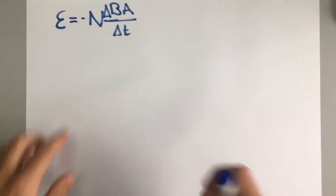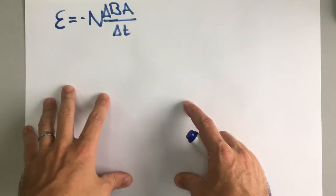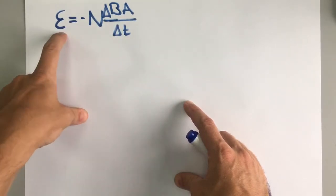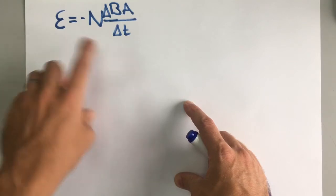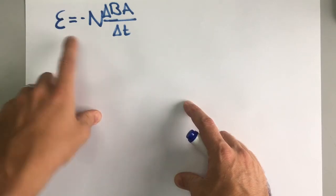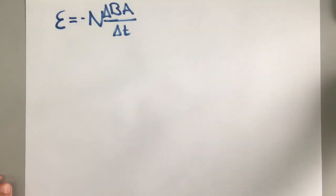Now the important thing to notice about this equation is that whenever there is a changing flux within a coil of wire, there is an EMF produced. That doesn't matter if that coil of wire is connected to anything or not, there is always an EMF produced. Now if that coil of wire is connected to stuff, then a current is induced as well.